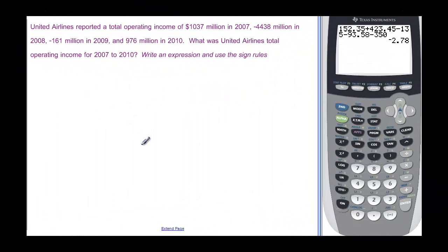Finally, and we have another problem very similar to the one we just did. We see that we have total operating income for 2007, 2008, 2009, and 2010 with these given values. They want us to find the total income, write the expression, and use the signs. Well, they tell us exactly what the signs are supposed to be.